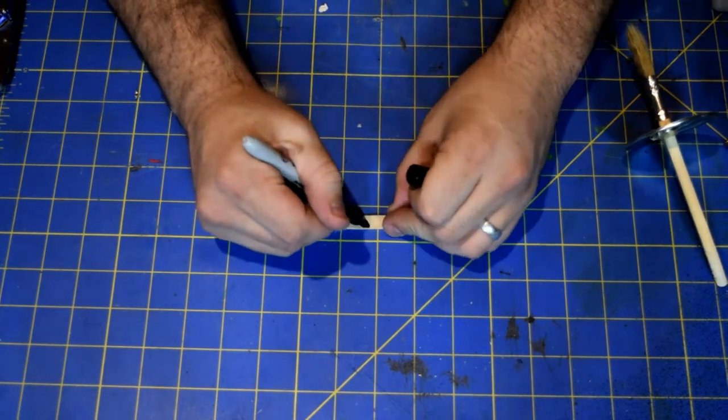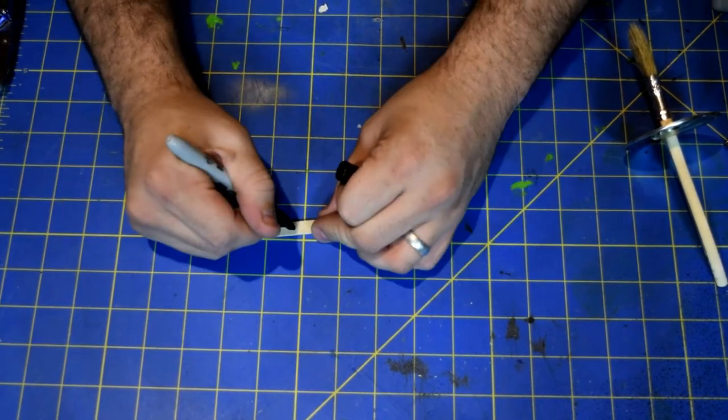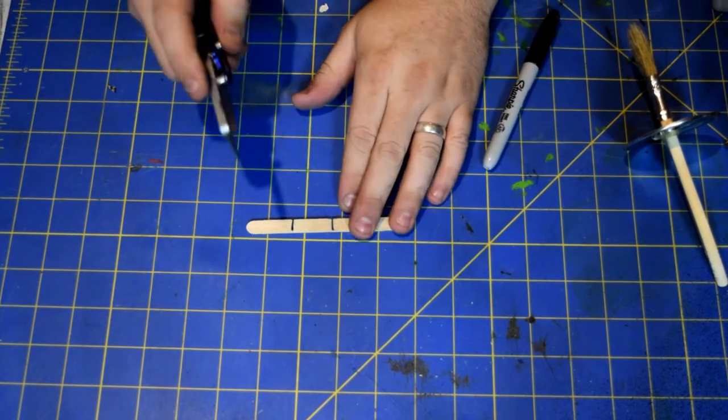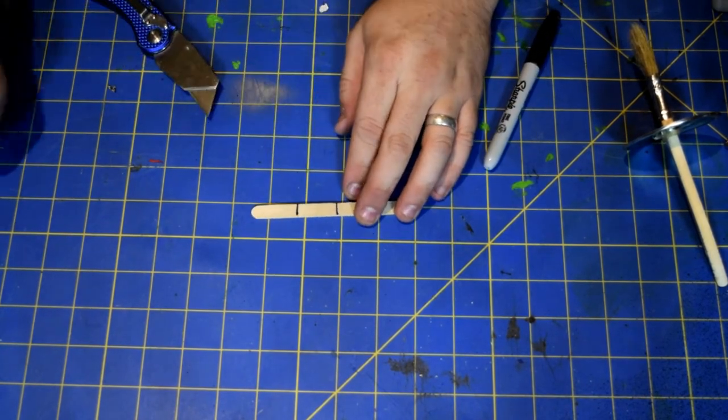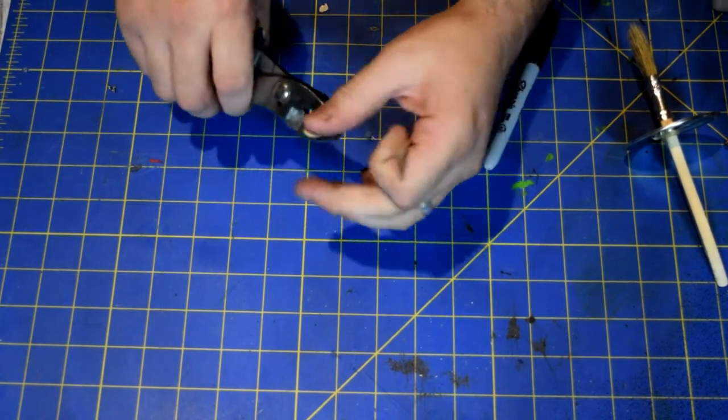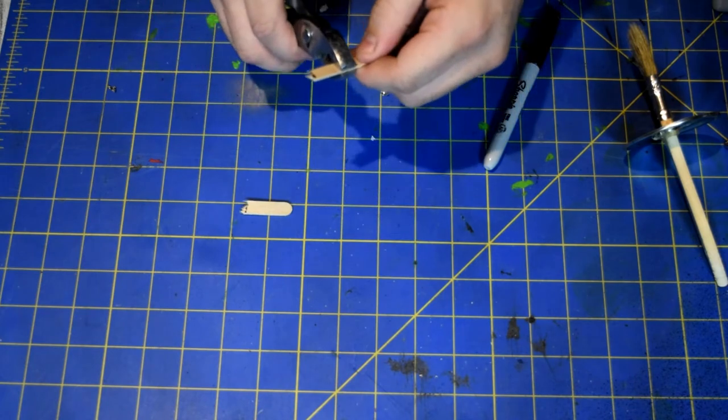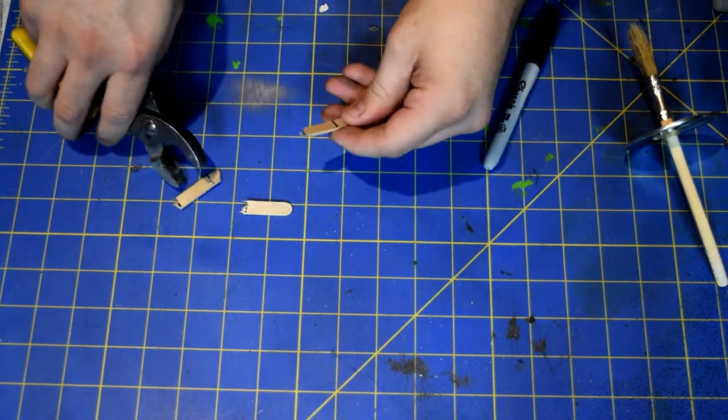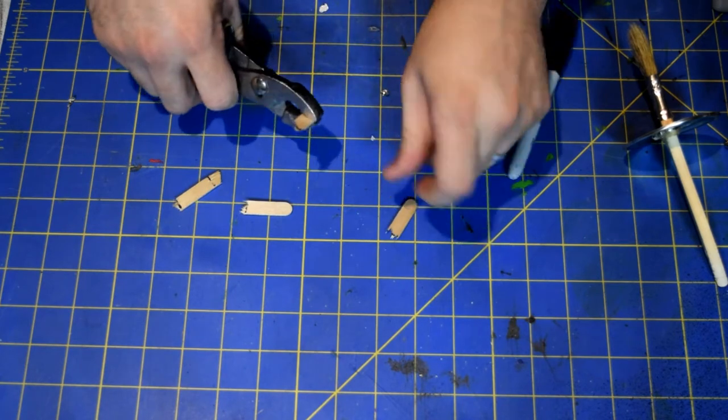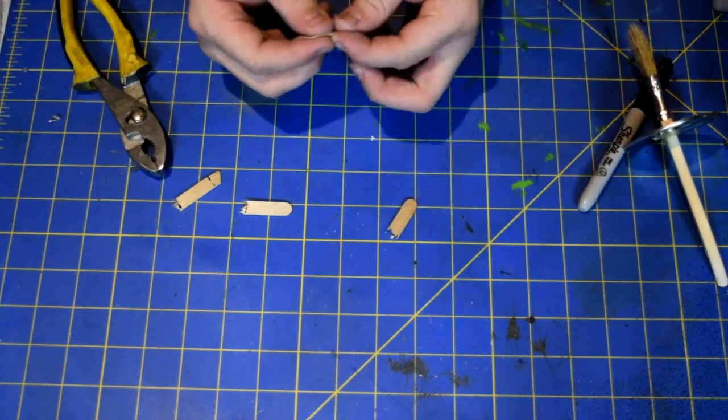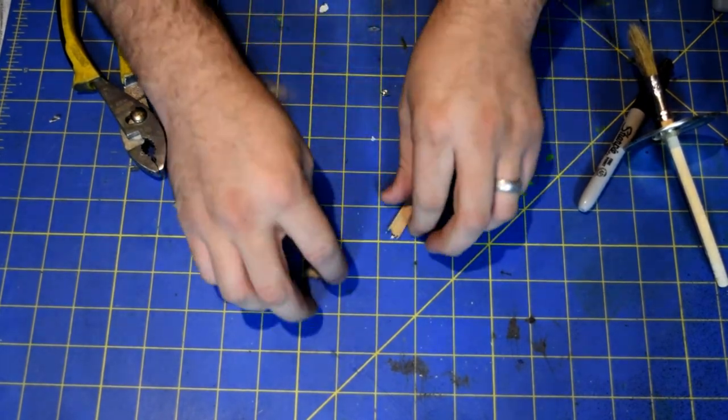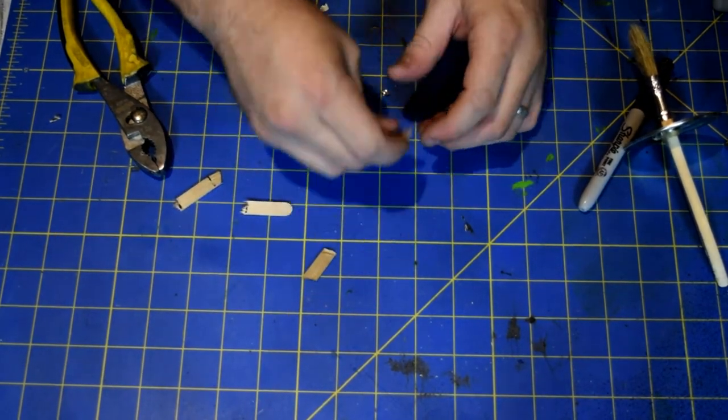We're just going to kind of measure this into like little fourths. And then you can either use your knife to cut them apart or you can just do something simple by taking your pliers and just kind of breaking it off at each one. You kind of want to maybe press those down just so you don't have to worry about getting splinters and other stuff.